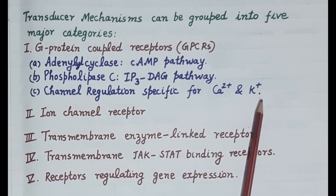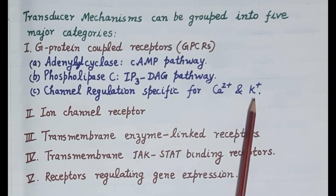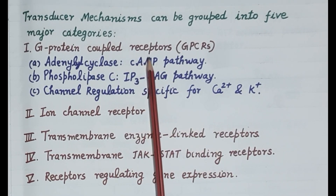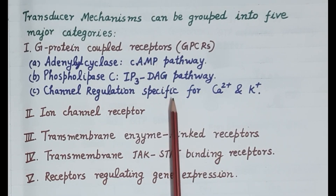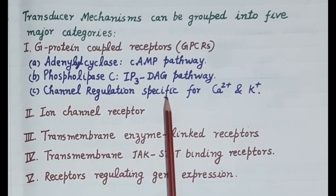For example, GABA (gamma-aminobutyric acid), an inhibitory neurotransmitter, acts on G-protein coupled receptors and inhibits calcium channels, thereby inhibiting the excitability of neurons.